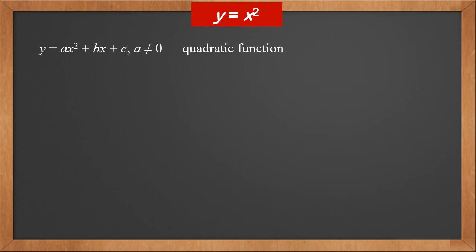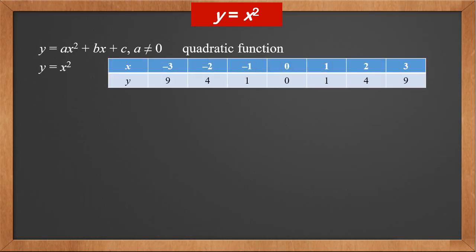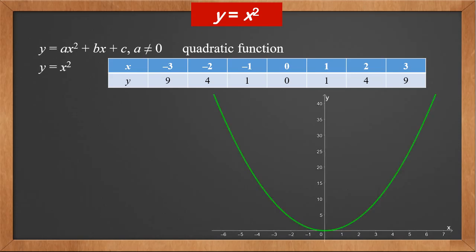Let's take a look at graphs of different quadratic functions. The simplest quadratic function is y equals x squared. Let's find some points first. We have x values as minus 3, minus 2, minus 1, 0, 1, 2, 3. Their y values are 9, 4, 1, 0, 1, 4, 9. Let's plot those points on the coordinate system, connect them with a smooth curve, and we get this graph. The graph is called a parabola. All quadratic functions graphs are called parabolas.